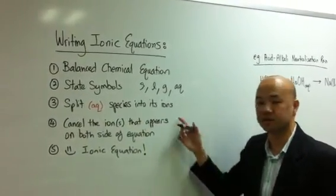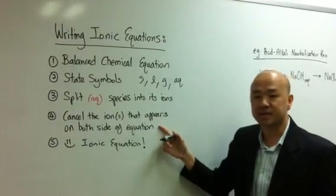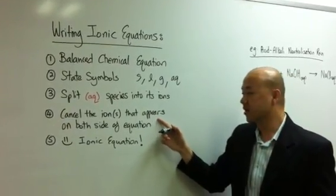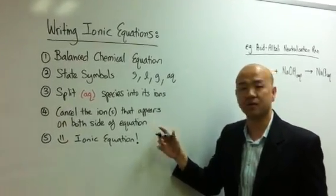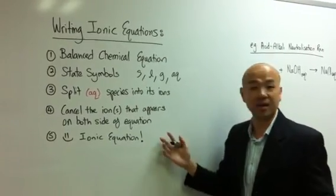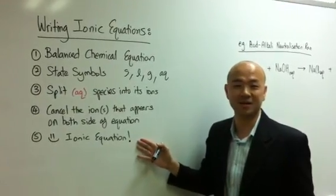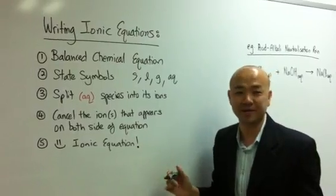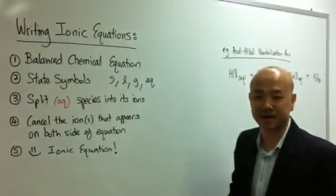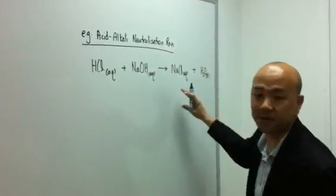In step four, you just cancel the ions that appear on both sides of the equation. And ta-da! Last step, you will find the ionic equation and it must be correct. Let's take a look at the example over here on the other side of the board.